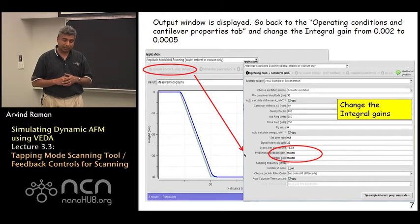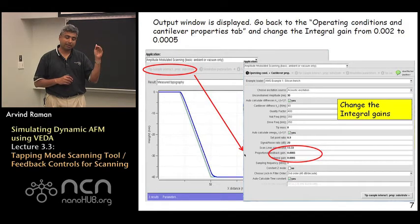So what one sees here, if you go to the results and look at measured topography, this is going to be the topography of the trench as measured by the oscillating probe.